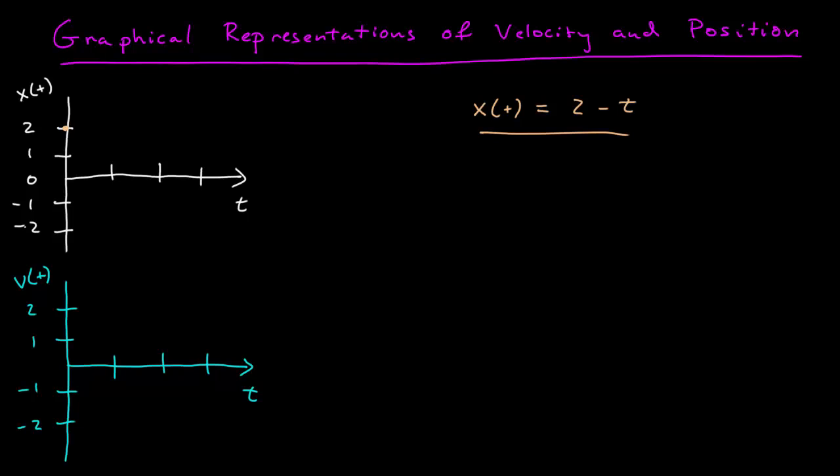At 0, it's equal to 2. At 1 second, it's equal to 1. At 2, it's equal to 0. And then at t equals 3, it looks like it's negative 1. I've got a straight line here. So there's my position function of time.